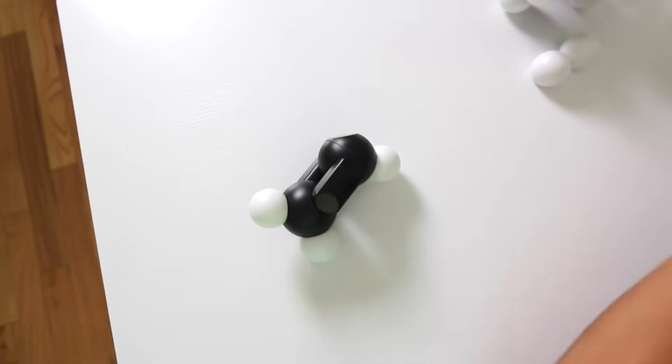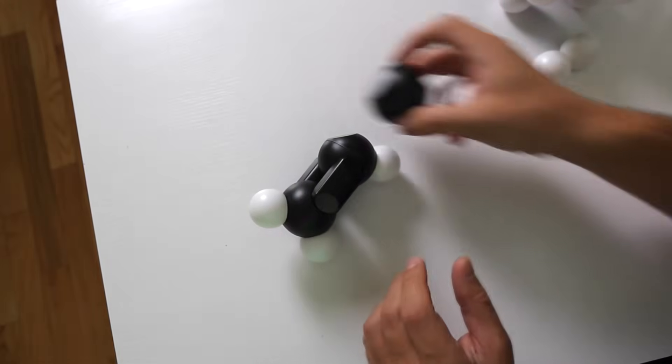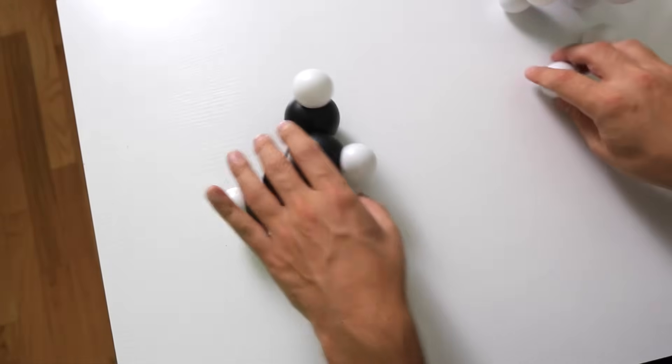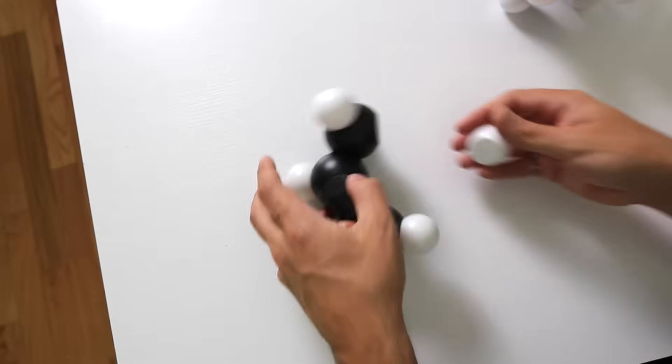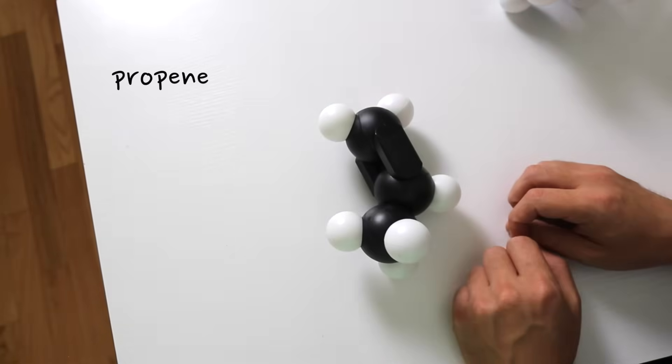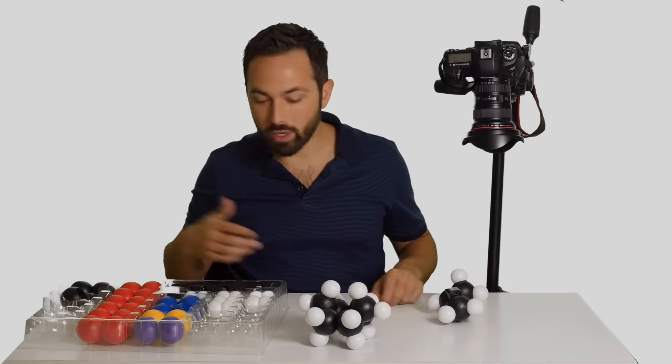We could make propene by adding another carbon. So we use the word for three, prop, and we add ene, propene. Again, we can make butene.